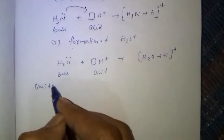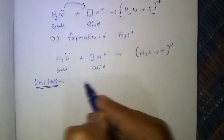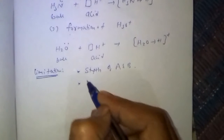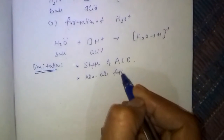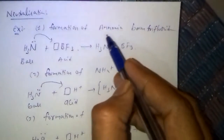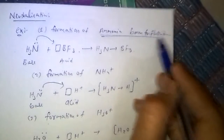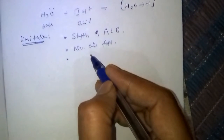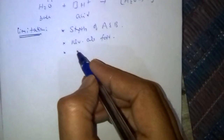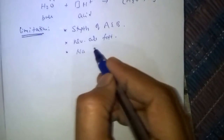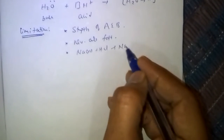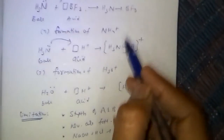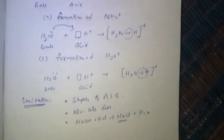Limitations of Lewis theory: First, it does not explain the strength of acids and bases. Second, generally neutralization reactions are fast, but the Lewis neutralization reaction — mainly the ammonia-boron trifluoride formation — is very slow, which is not explained by Lewis theory. Third, in some reactions ionic bonds are formed, for example NaOH + HCl gives NaCl + H2O. But in Lewis neutralization reactions a coordinate bond is formed, which is not explained by Lewis acid-base theory.